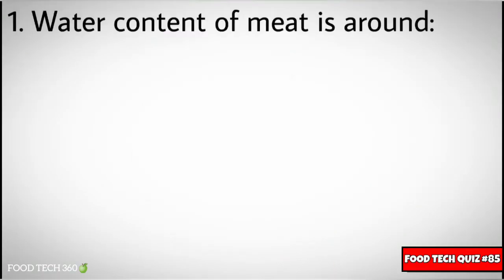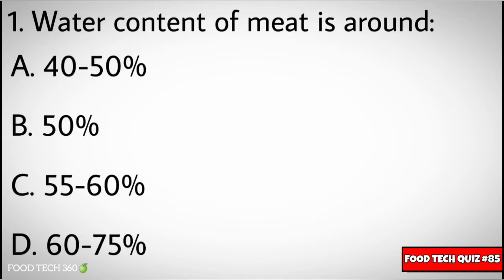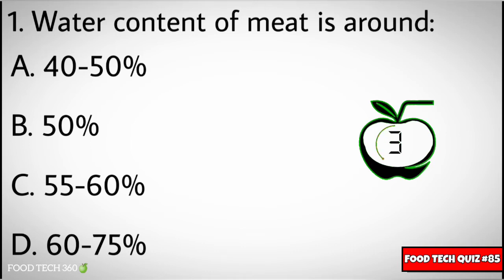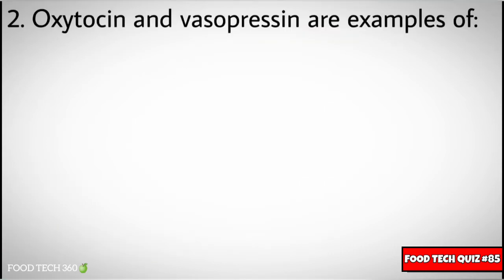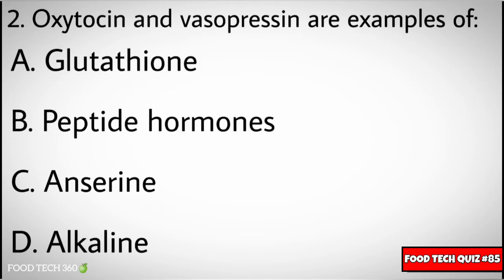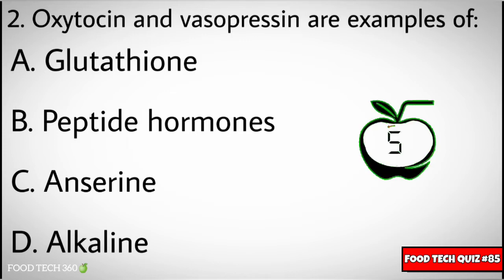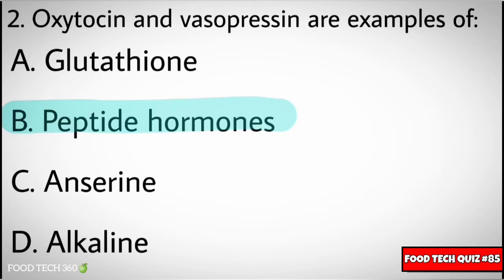Question number one: water content of meat is around. Options: A) 40 to 50%, B) 50%, C) 55 to 60%, D) 60 to 75%. Correct answer: D) 60 to 75%. Question number two: oxytocin and vasopressin are examples of. Options: A) glutathione, B) peptide hormones, C) anserine, D) alkaline. Correct answer: B) peptide hormones.